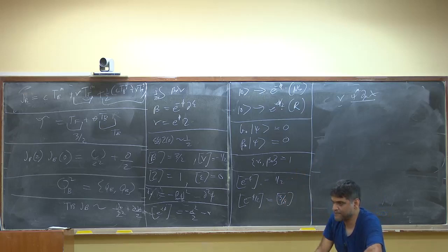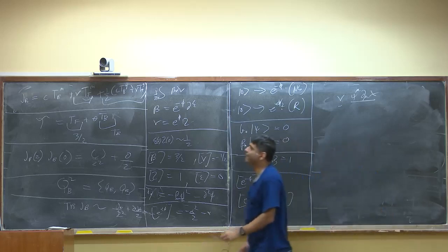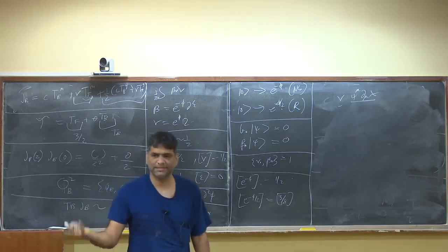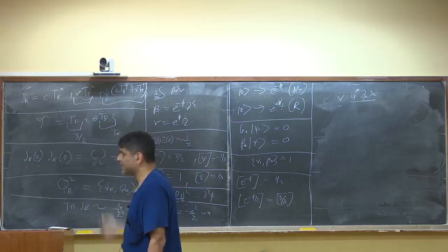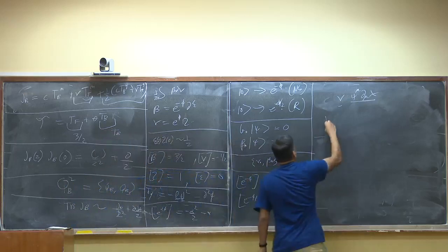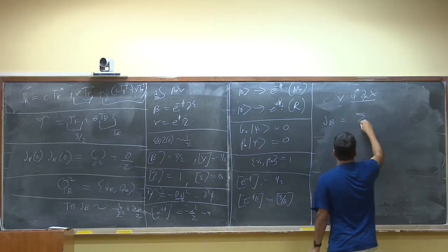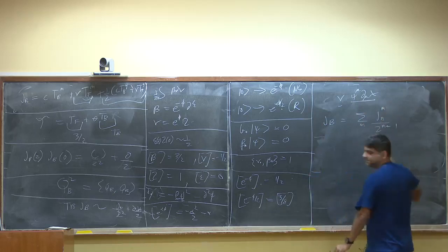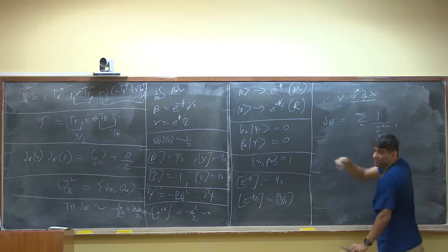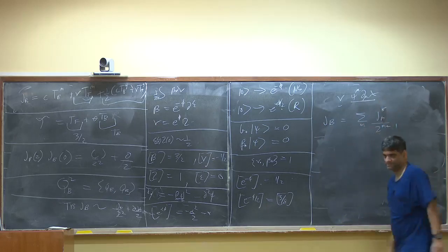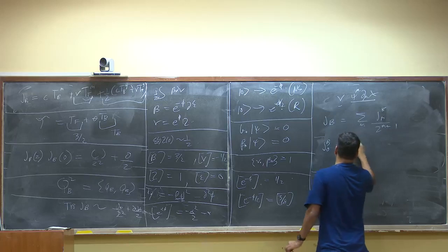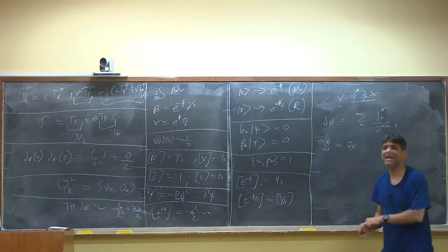Once we have this current, we can mode expand every field: c, x, psi, beta, gamma, and then mode expand the current itself as J_B equals sum over m of J_Bm times z to the minus m plus 1. The zero mode J_B0 is Q_B, the BRST charge itself, which can then be written in terms of the modes of the other fields.